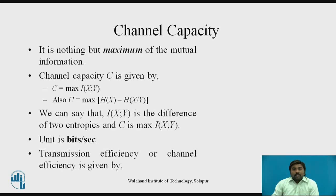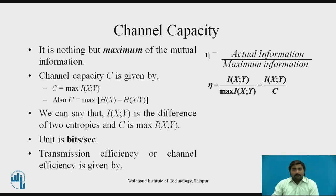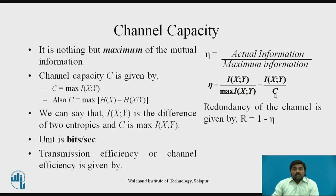Transmission efficiency or channel efficiency is given by η = actual information / maximum information, where actual information is the mutual information I(x;y) and maximum information is the channel capacity C = max I(x;y). Redundancy is given by r = 1 − η.